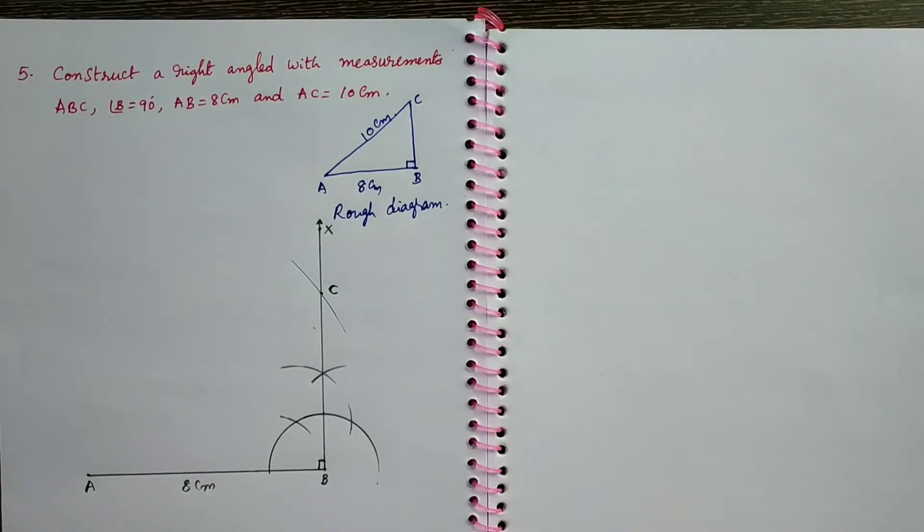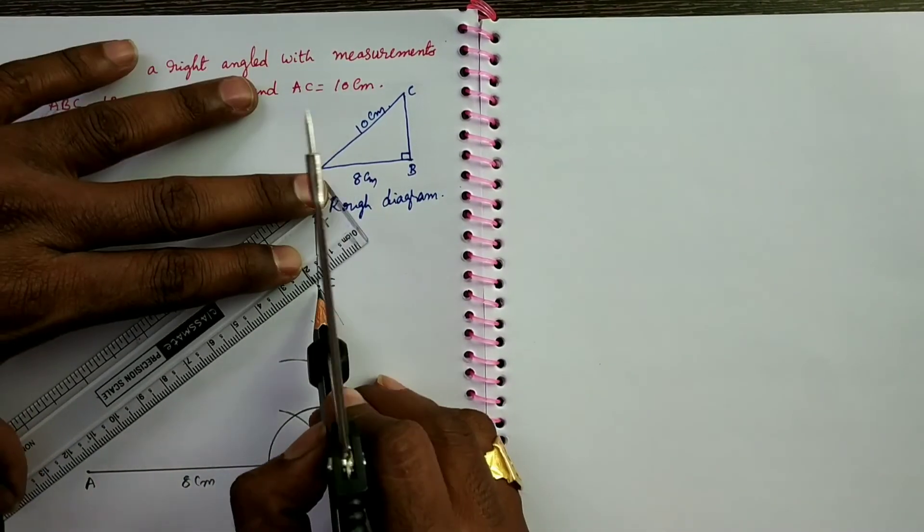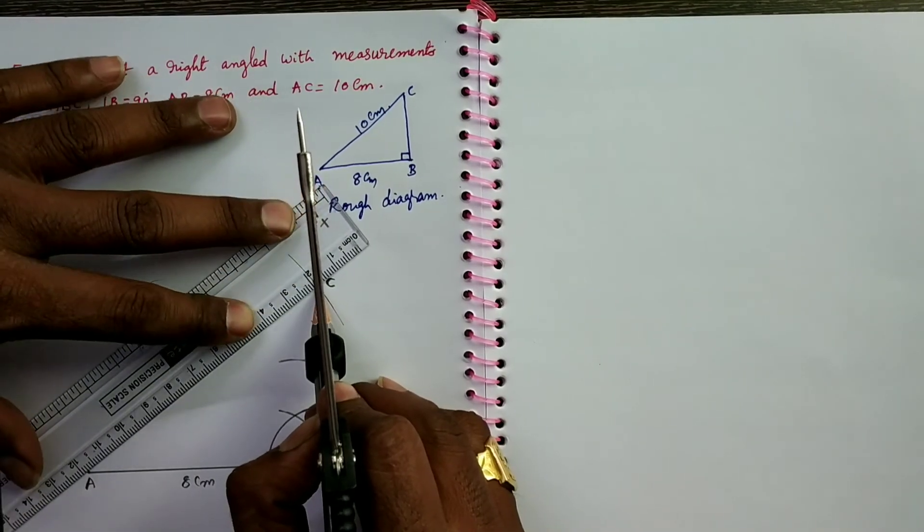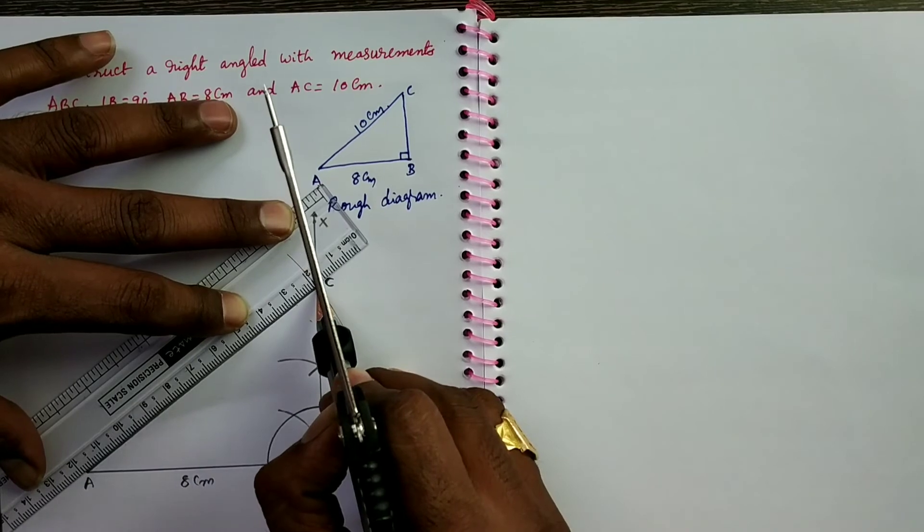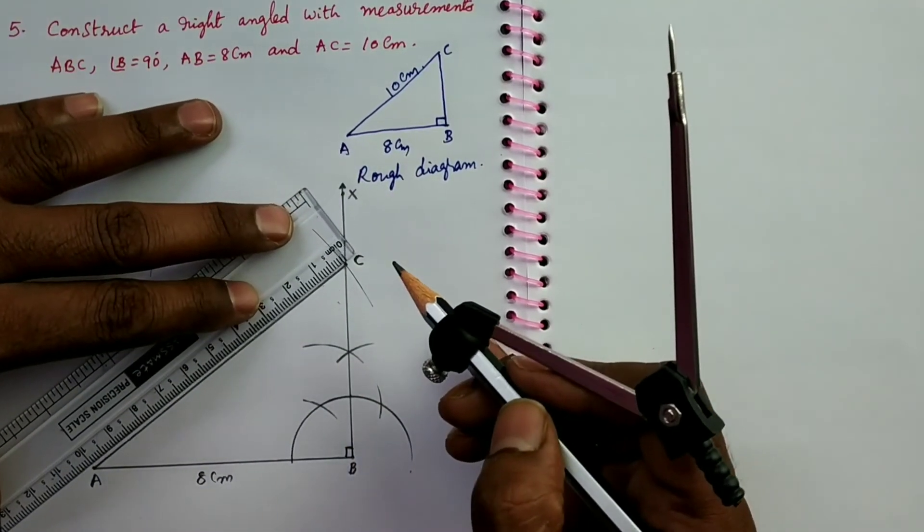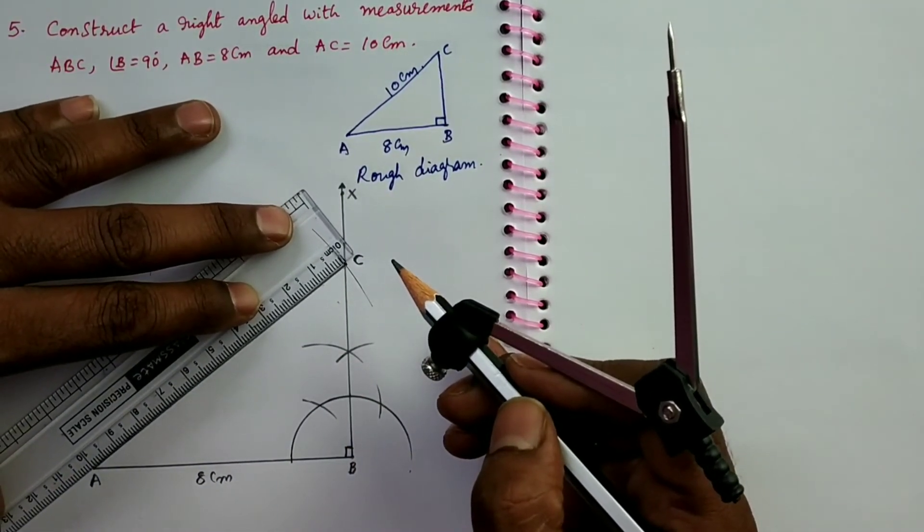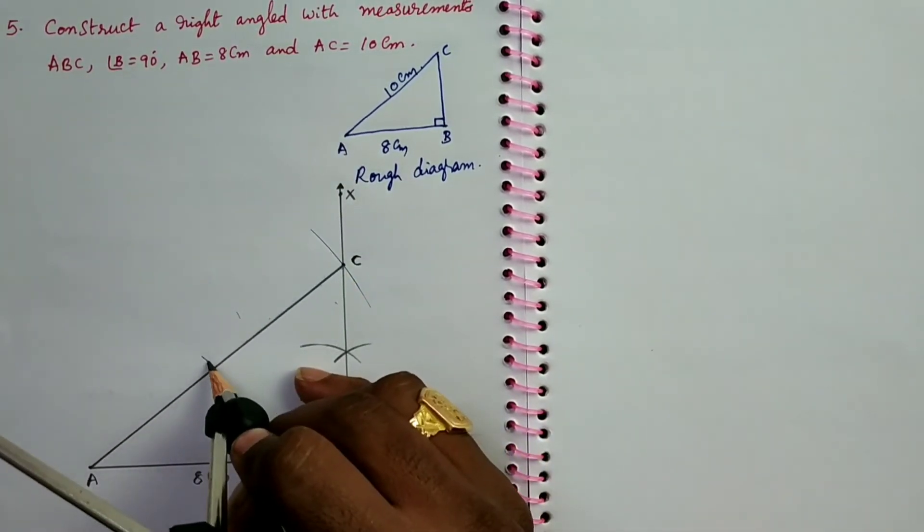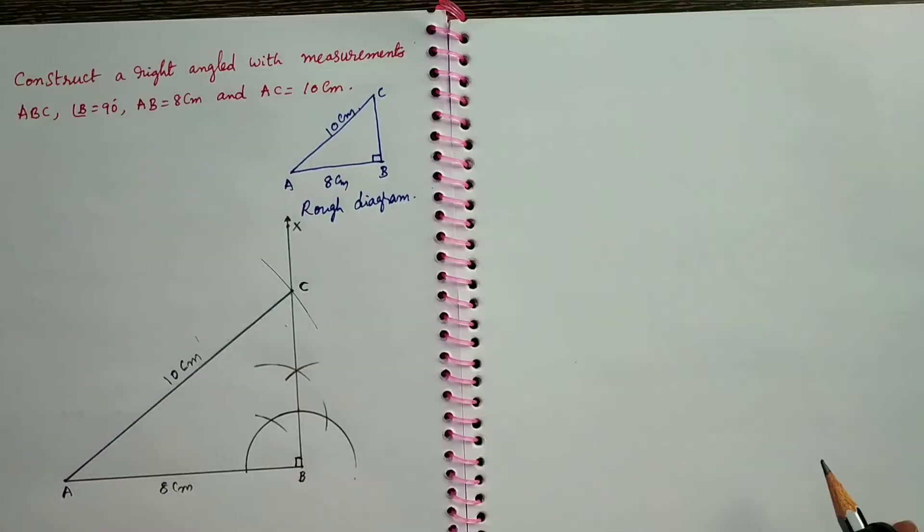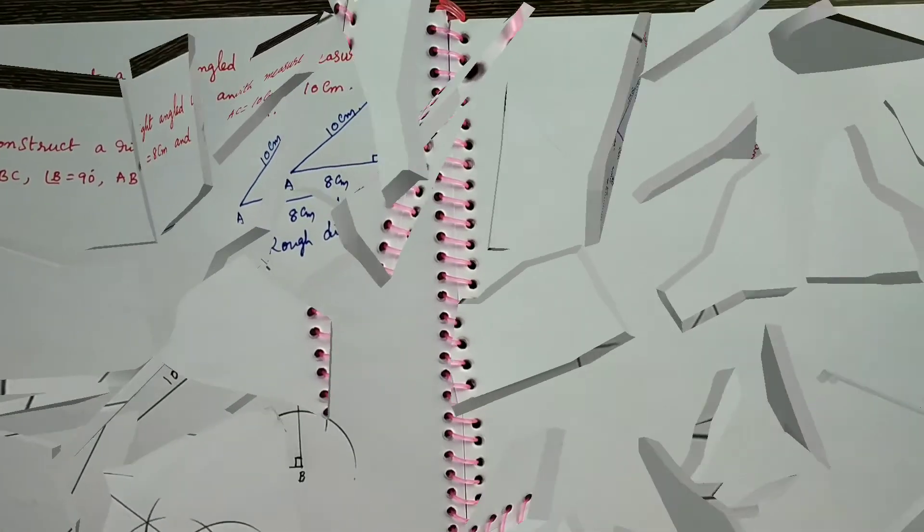Now you join AC. The length is 10 cm. Construction is over. Next, steps of construction.